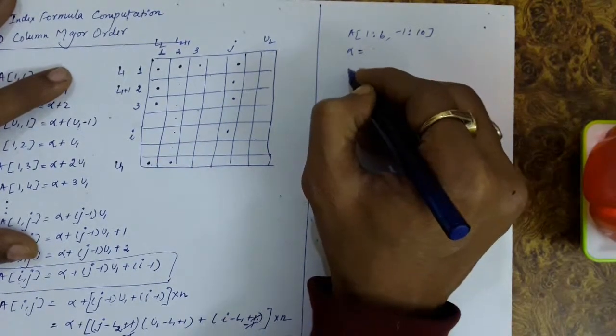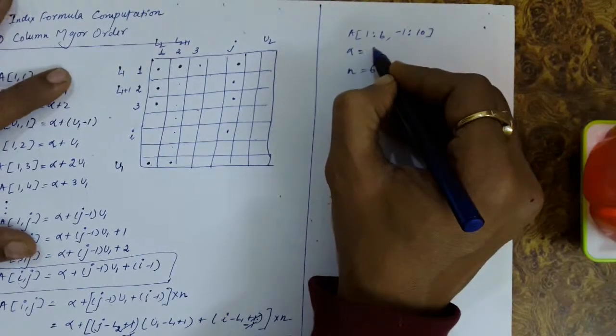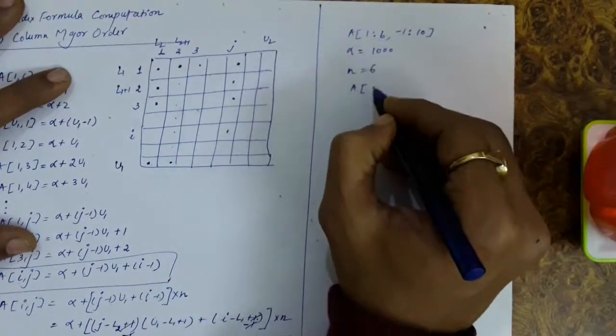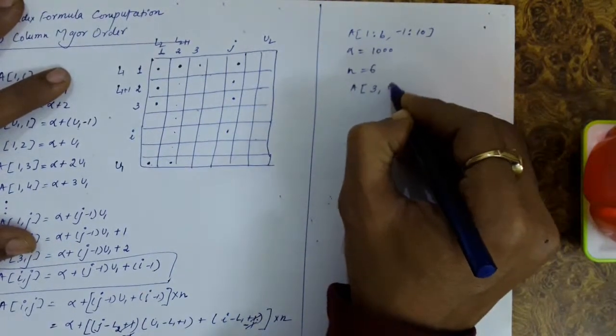5 bytes, sorry 6 bytes for storage, and alpha, let's say, means the address of the first element is 1000. And we are interested in finding out the address of the element a[3,6], let's say.